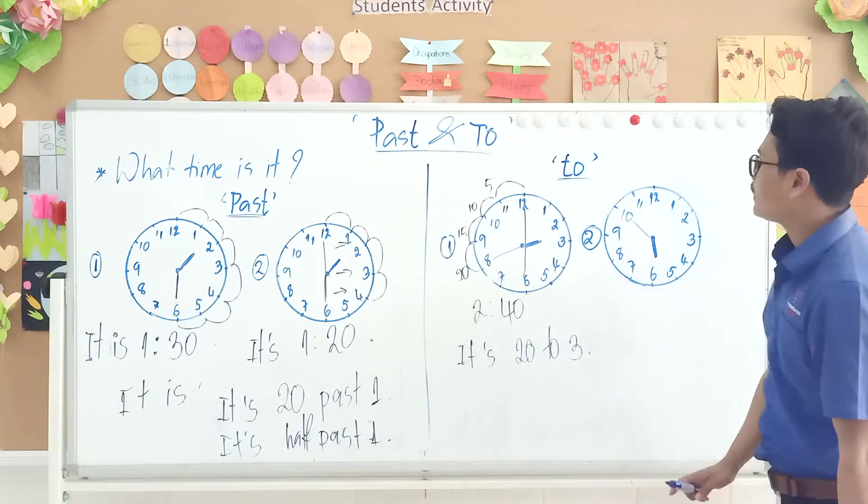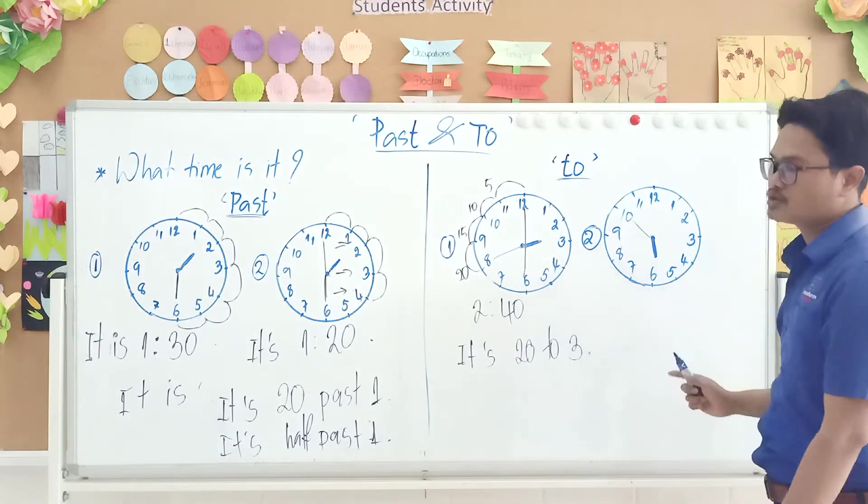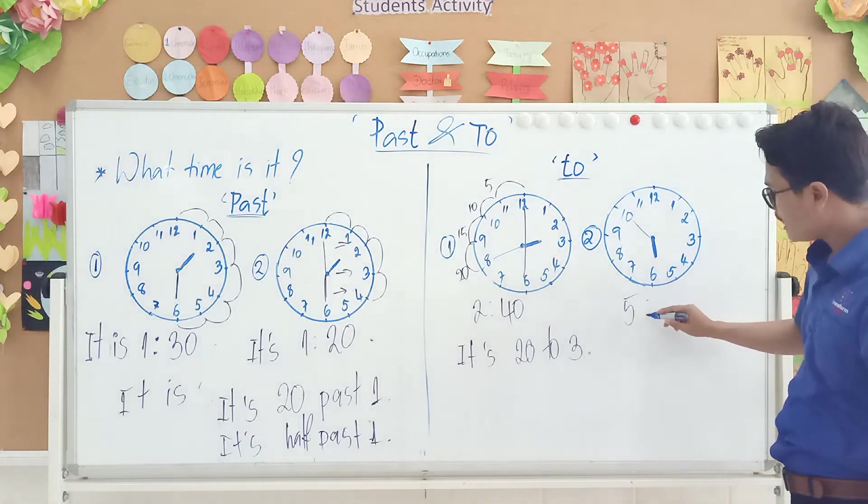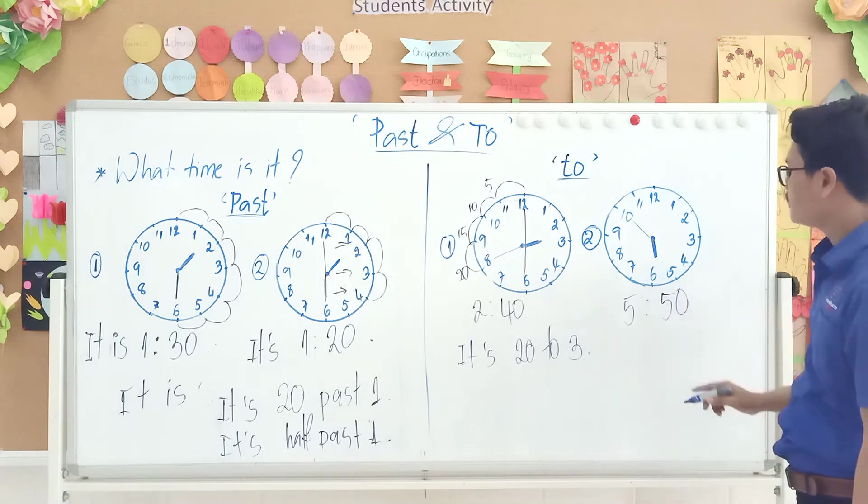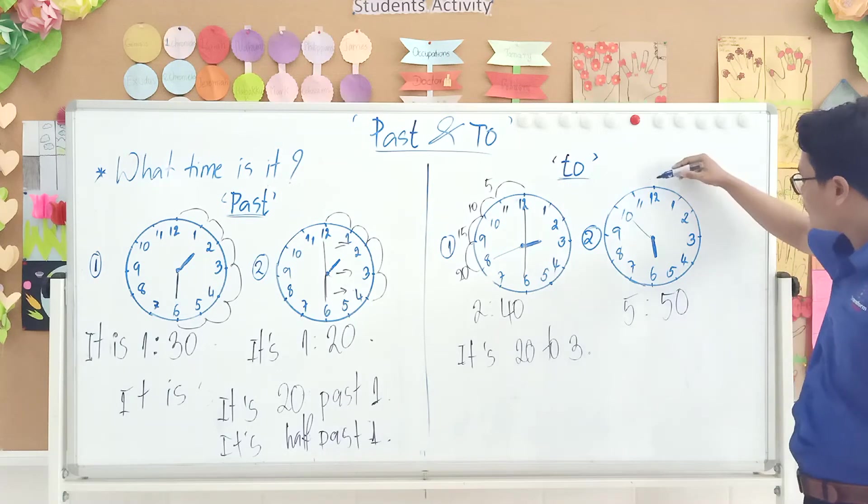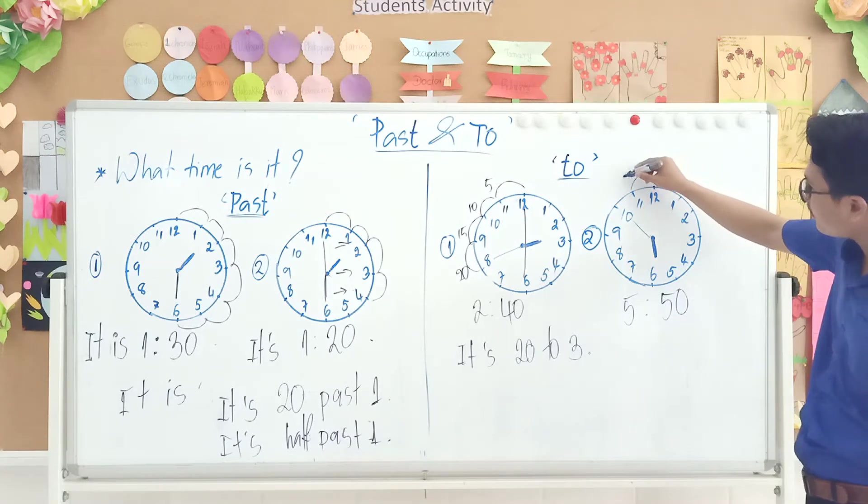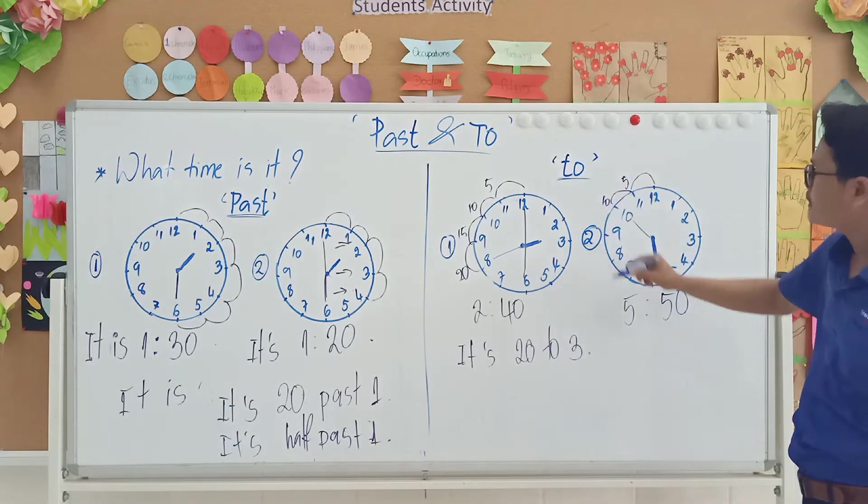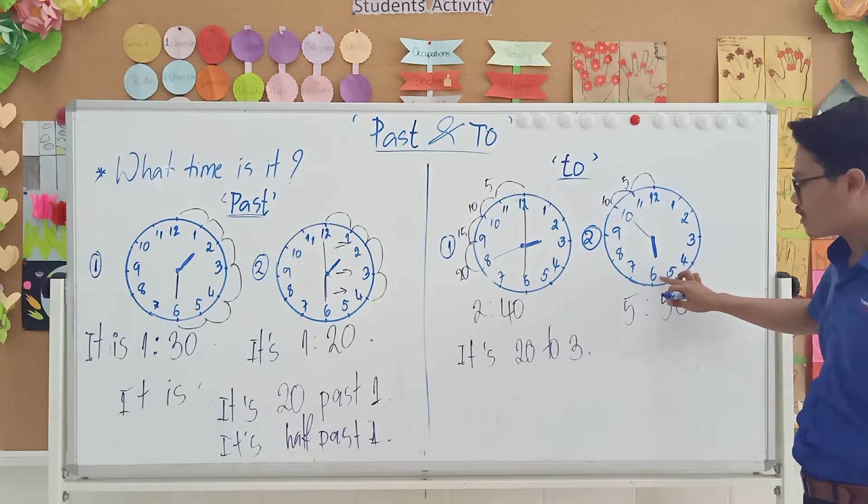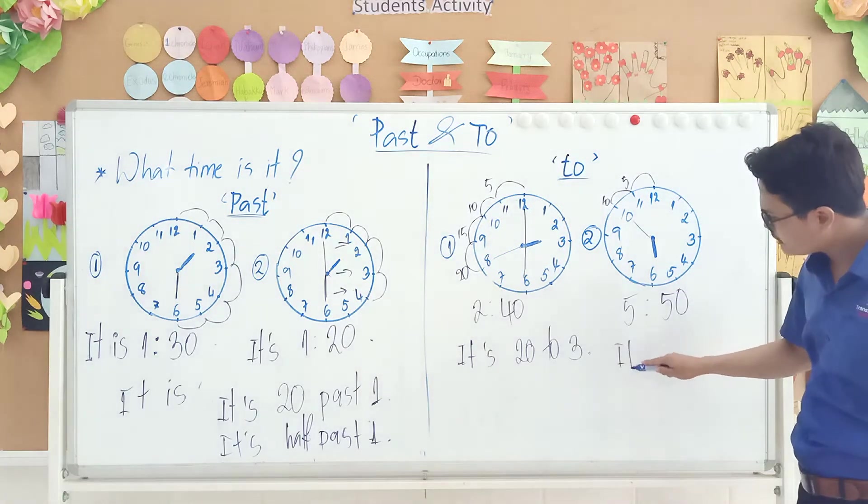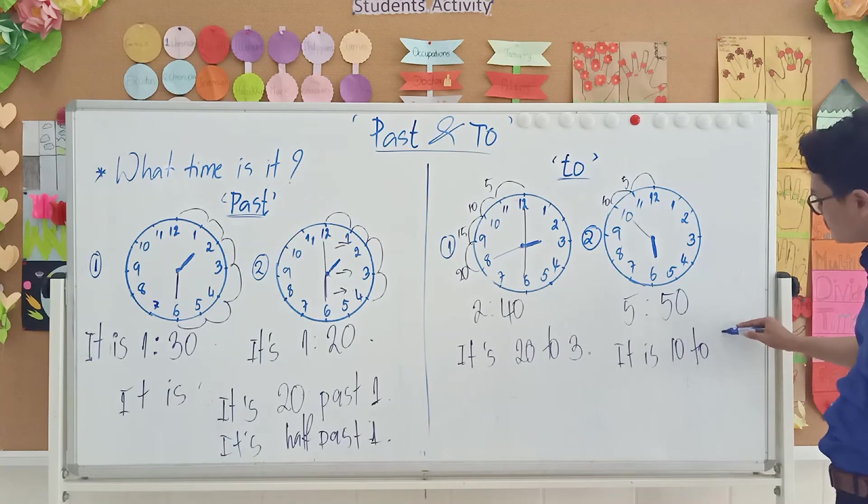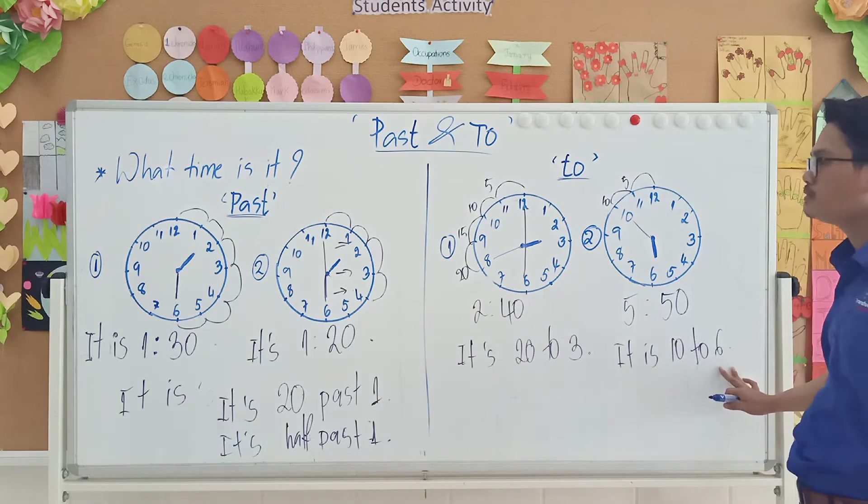The next one. What time is it? It is 5 and 50, so 5:50. So how would you write with 'to'? You need to count backward. From here to here is 5 minutes, and from here to here is 10 minutes. So it means that 10 more minutes will be 6 o'clock. So you need to write it is 10 to 6.